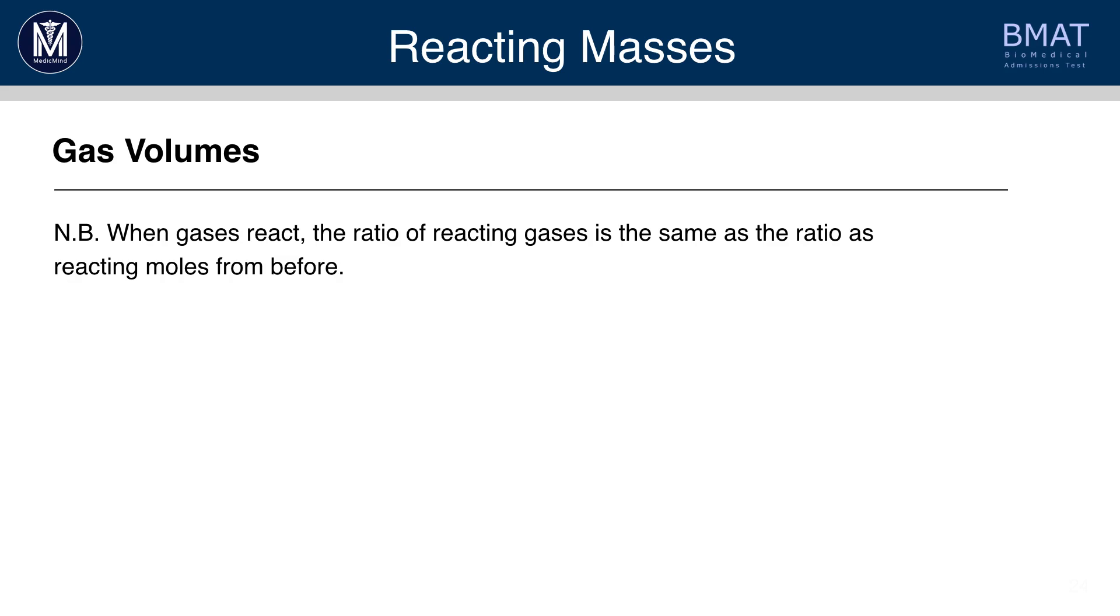So, just a note, when gases react, the ratio of reacting gases is the same as the ratio of reacting moles from before. So, for example, if you have 1 mole of A reacting with 2 moles of B, then that means that 24 dm cubed of A would react with 48 dm cubed of B.